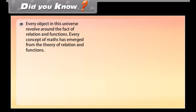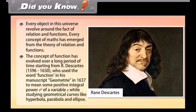Did you know? Every object in this universe revolves around the fact of relation and functions. Every concept of math has emerged from the theory of relation and functions. The concept of function evolved over a long period of time, starting from R. Descartes (1596–1650), who used the word function in his manuscript Geometry in 1637 to mean some positive integral power x^n of a variable x, while studying geometrical curves like hyperbola, parabola, and ellipse.